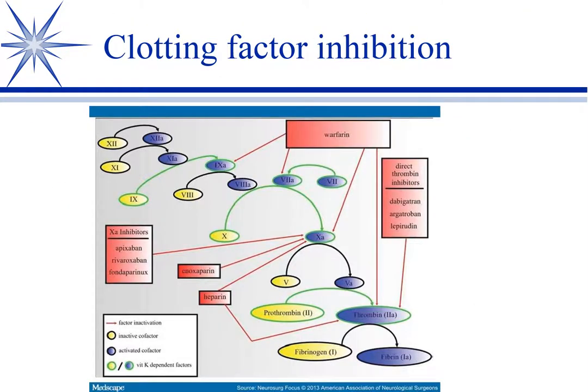The other way we prevent thrombus formation is by inhibiting clotting factors. You only need to know how two of these work: heparin inhibits thrombin and factor Xa, and enoxaparin, which is a low molecular weight heparin, only inhibits factor Xa.